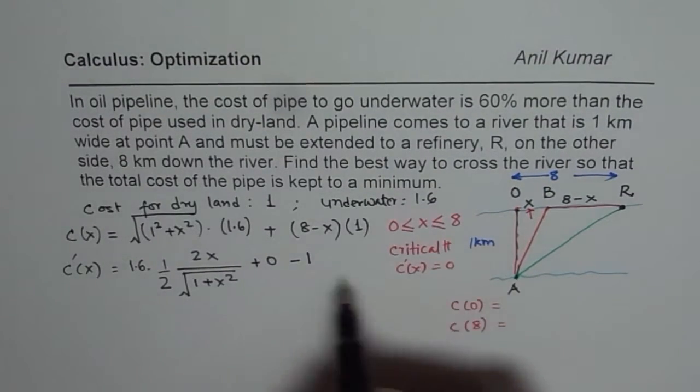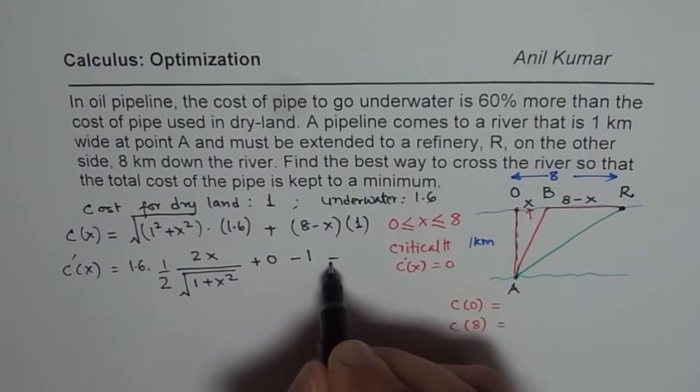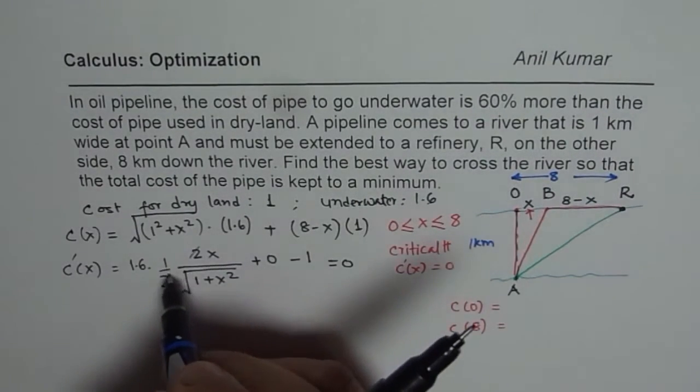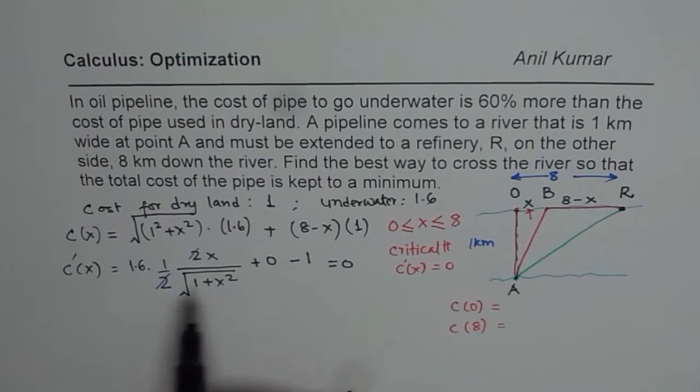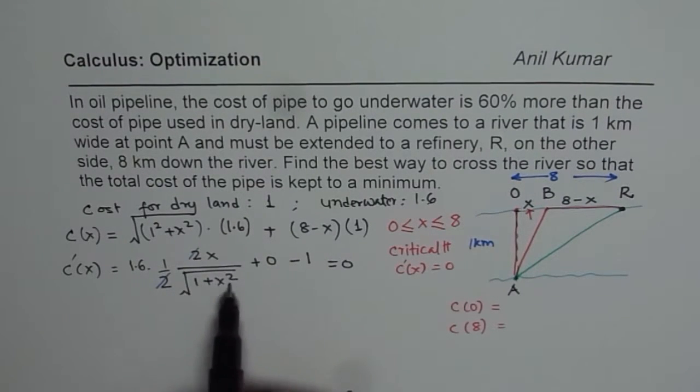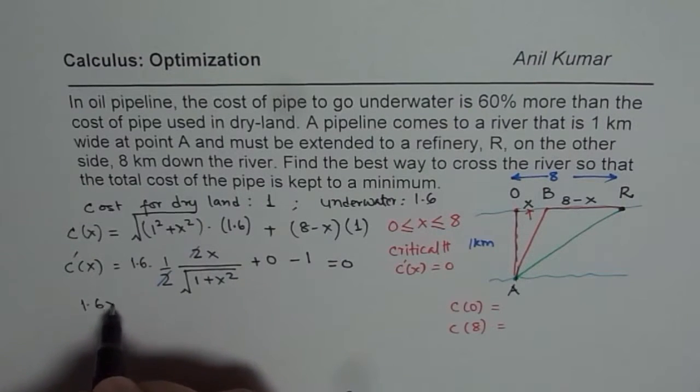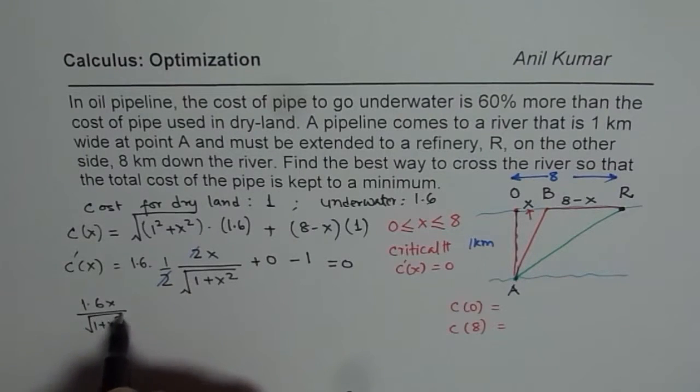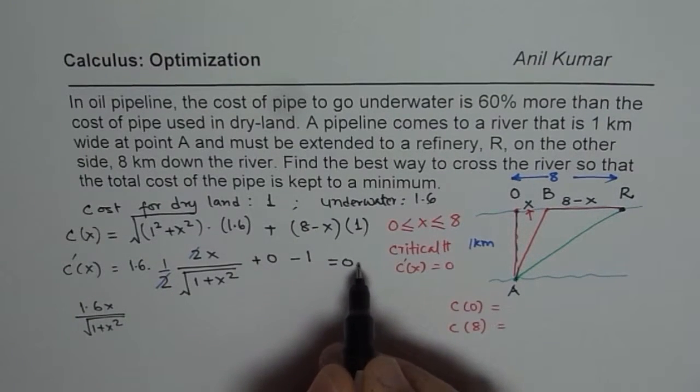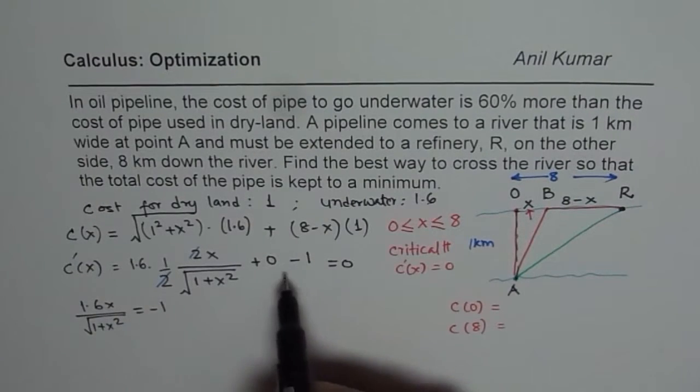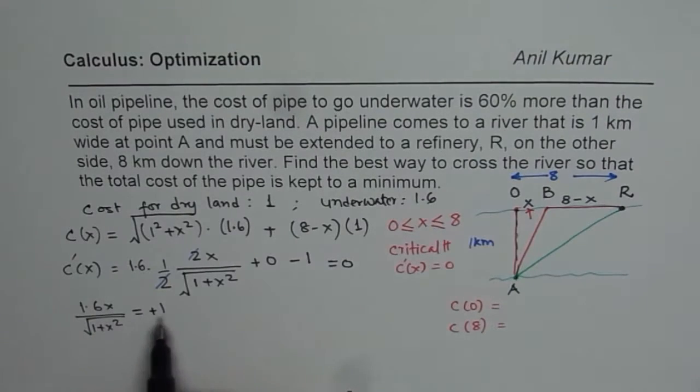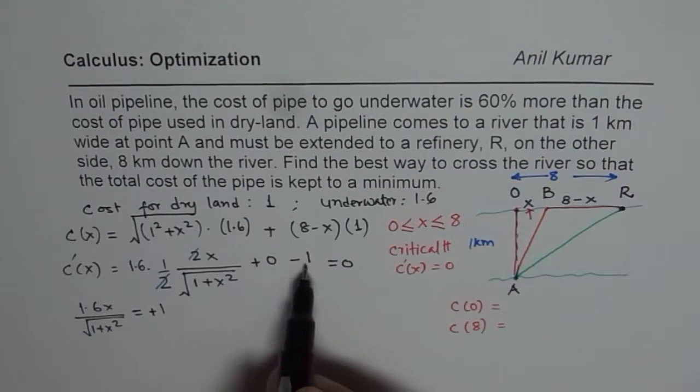For the critical point this should be equal to 0. We can simplify this. 2 and 2 cancel off, and now we have 1.6x/√(1 + x²) - 1 = 0, or this equals 1 when taken on the other side.